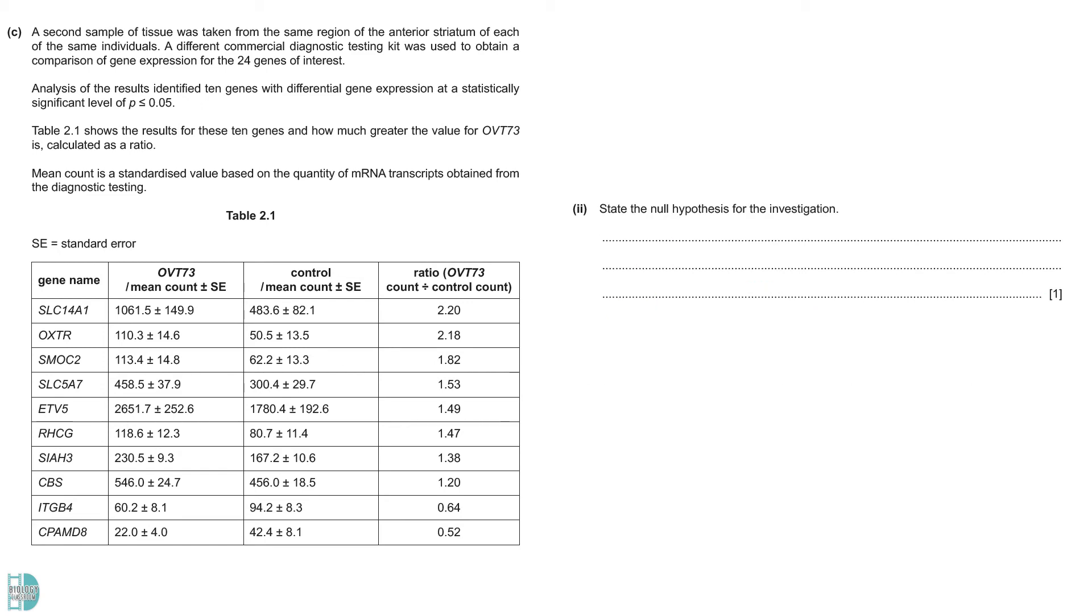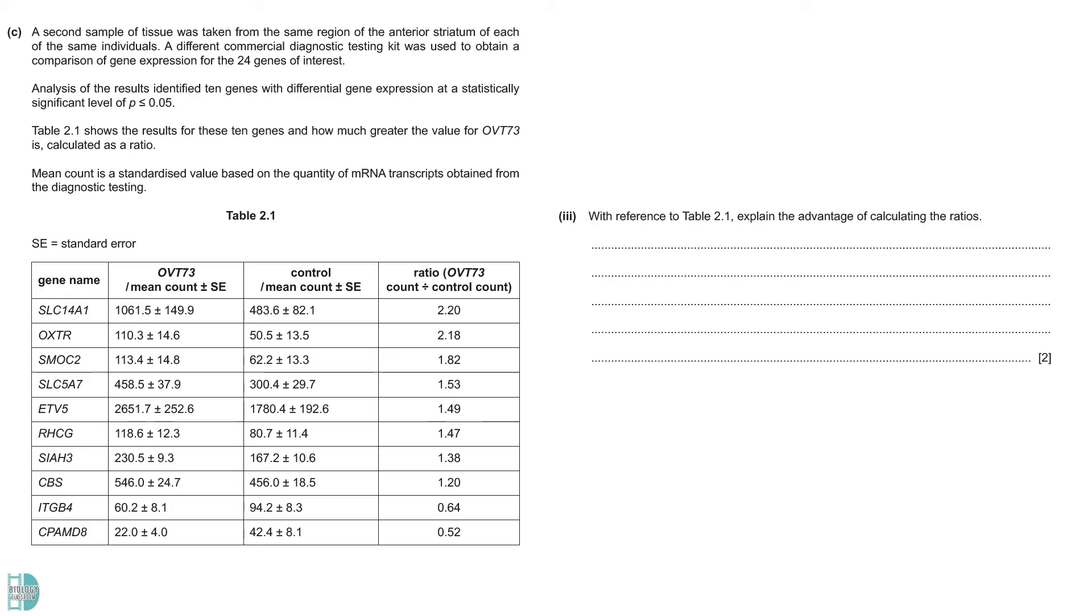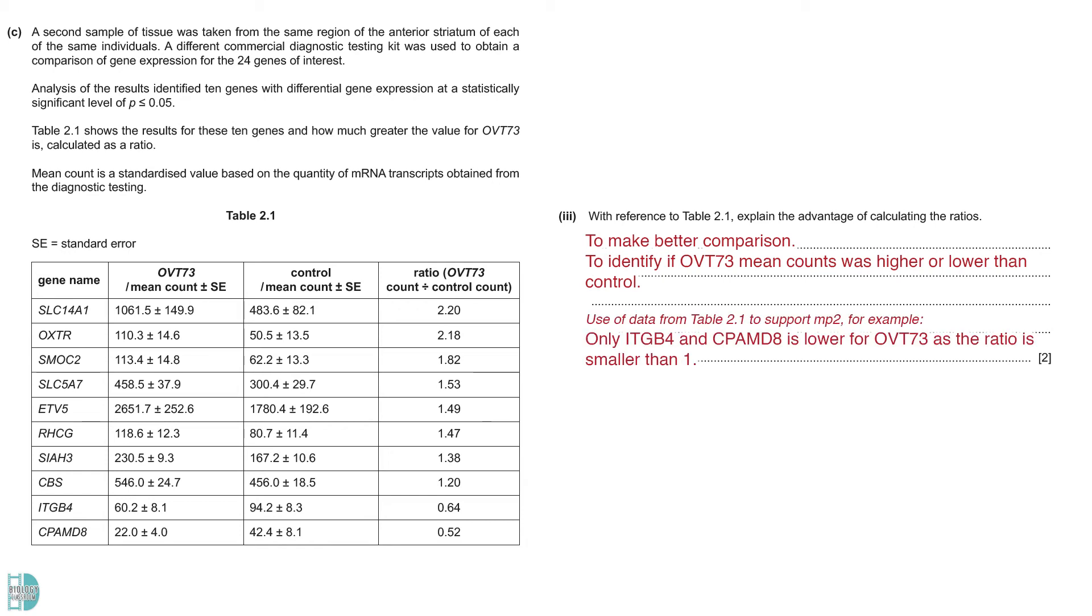Part 2: State the null hypothesis for the investigation. In a T test, we always hypothesize that the difference between the mean values we are comparing is not significant. Part 3: Explain the advantage of calculating the ratios. Expressing the data in ratio allows us to make comparison more easily. The value let us identify if OVT73 mean counts were higher or lower than the control. Then, use data from table 2.1 to support marking point number 2. For example, you can say that only two genes were lower for OVT73 as their ratios are smaller than 1 while the first 8 were higher as their ratios are more than 1.